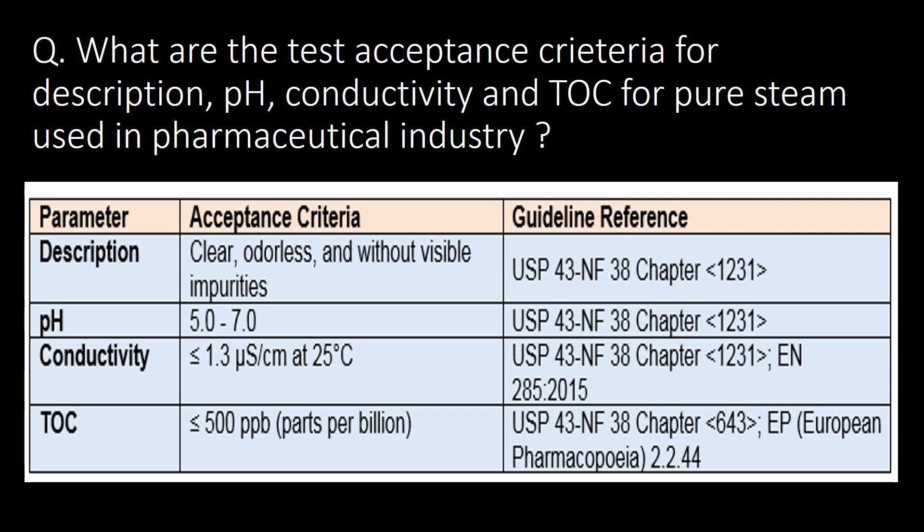What are the test acceptance criteria for description, pH, conductivity, and TOC for pure steam used in the pharma industry? You can refer to the below table for the tests and their acceptance criteria. Description should be clear, odorless, and without visible impurities. pH should lie between 5 and 7. Conductivity limit is less than 1.5 microsiemens per centimeter at 25°C, and TOC limit is less than 500 ppb (parts per billion).